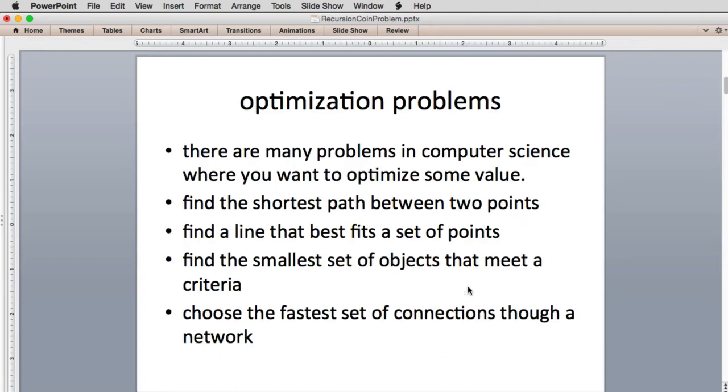This is in a general class of problems called optimization problems. There are many problems in computer science where you want to optimize some value. It happens in all the sciences when you're applying computer science to them. For example, you want to find the shortest path between two points, find a line that best fits a set of points, find the smallest set of objects that meet some criteria, or choose the fastest set of connections through a network. So these are all types of optimization problems.